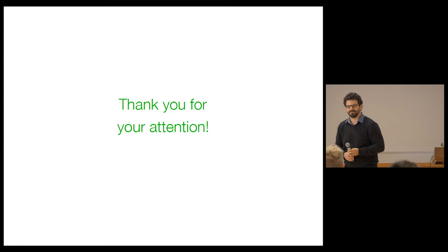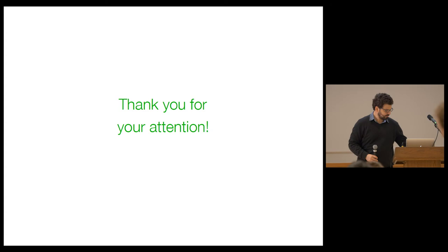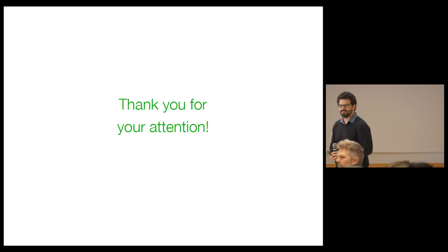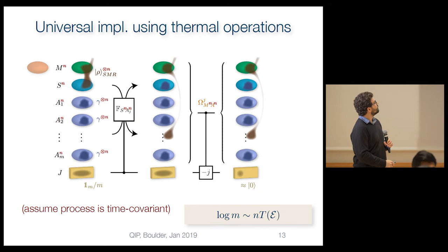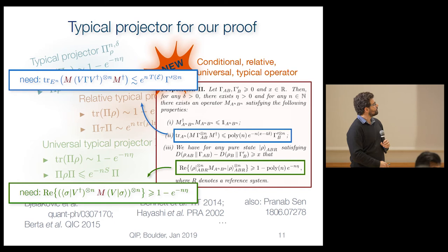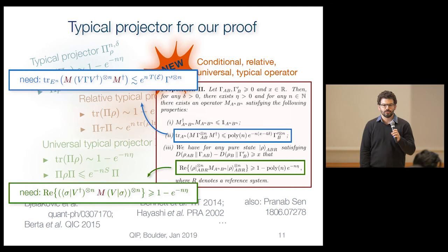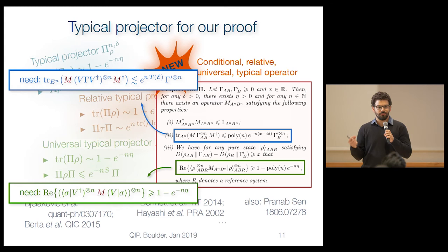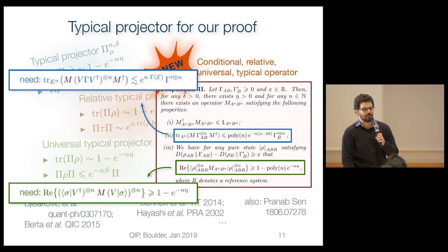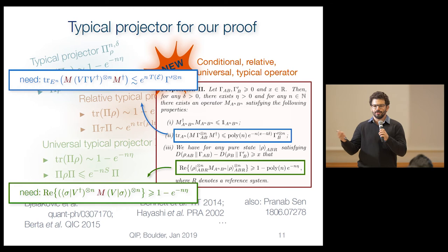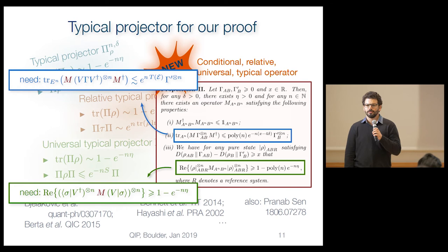Question: I was wondering about the universal relative typical projector — it seems like a really nice tool used in thermodynamics. Do you have a sense of whether it could be used in other resource theories, and what properties of the resource theory you would need? Answer: I haven't thought about it that much. In any resource theory where you have a state that has to be conserved by evolution, by definition of our framework it would go through — so it's more general than thermodynamics on paper, but I don't have a concrete go-to example.